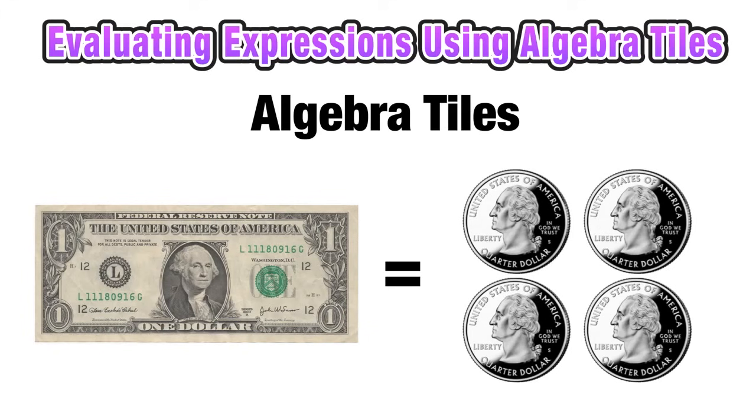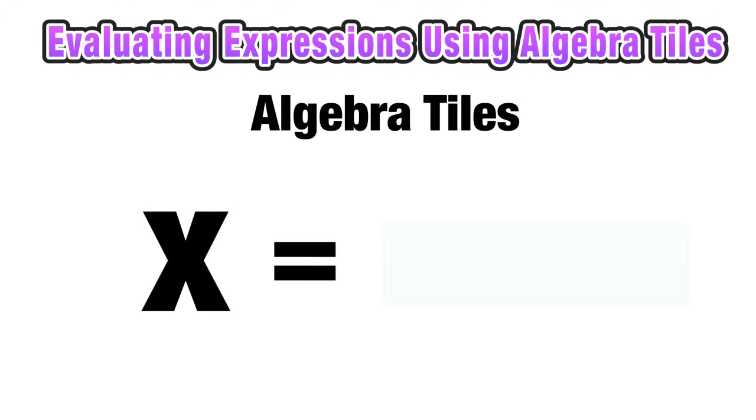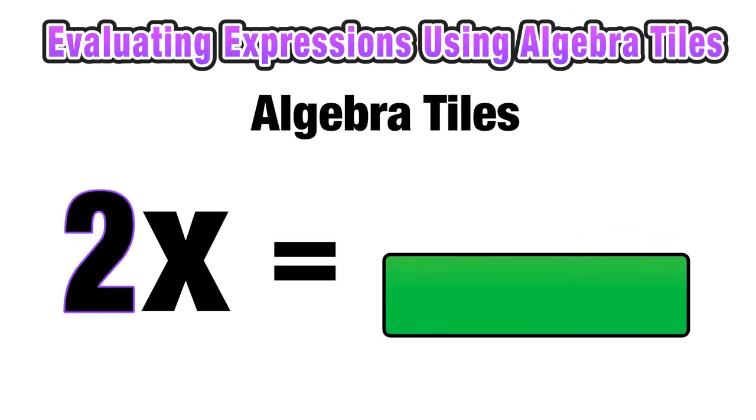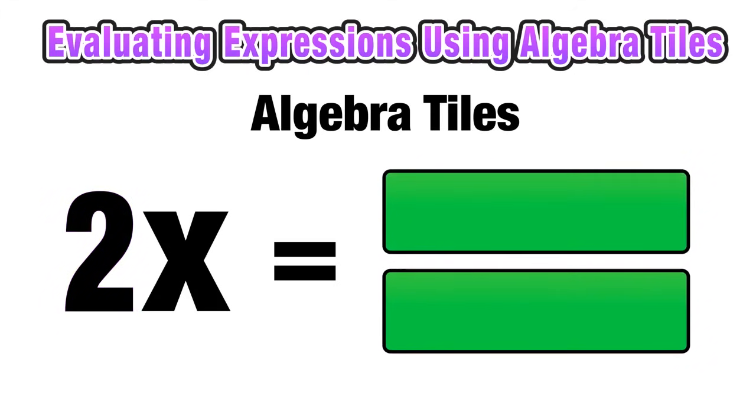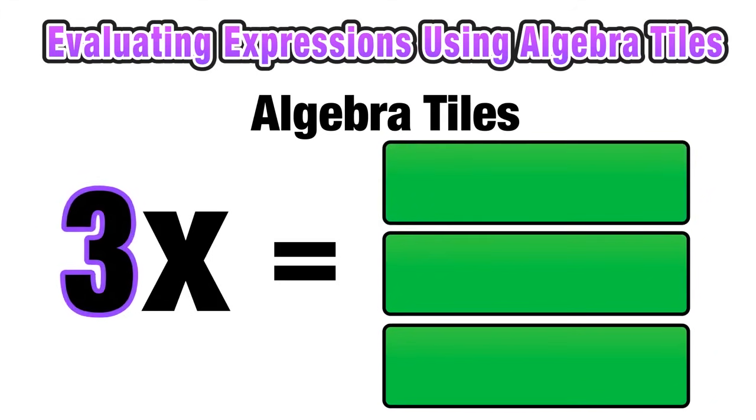So now we're going to extend this thinking to evaluating algebraic expressions. To represent our variable X, we're going to use an algebra tile that is a green rectangle. If we wanted to represent 2X, we would need 2 green rectangles. And if we wanted to represent 3X, we would need 3 rectangles, and so on and so forth.